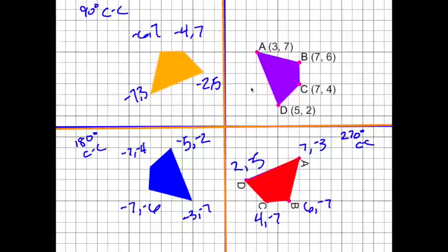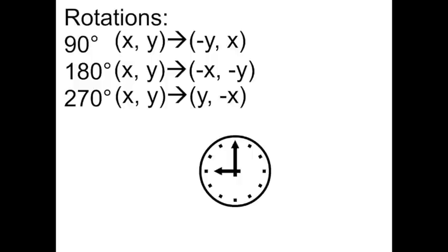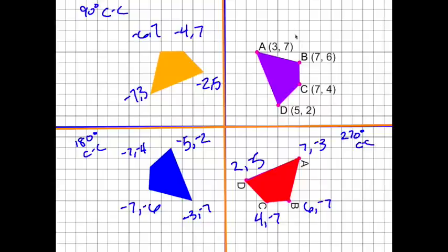Now that we have the coordinates for each rotation, let's compare them to the original rules. For the 90 degree rotation, we started at A(3, 7) and it became (−7, 3). B went to (−6, 7), C to (−4, 7), and D to (−2, 5). So we did follow that rule — switch x and y, and change the sign of the new first coordinate.